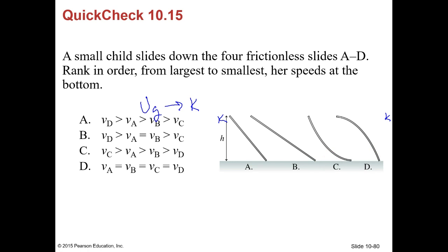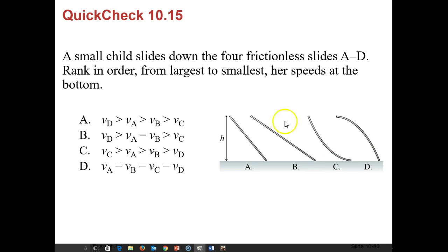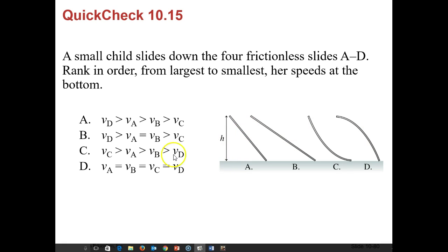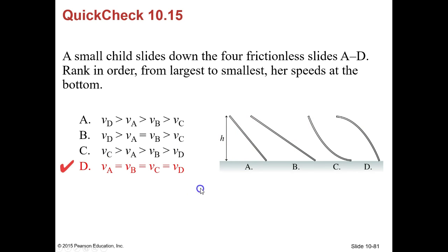Quick check 10.15: a small child slides down four different slides. What is her speed at the bottom? Since height is the only thing that matters and not the path, her speed should be the same at the bottom regardless of which slide she uses.